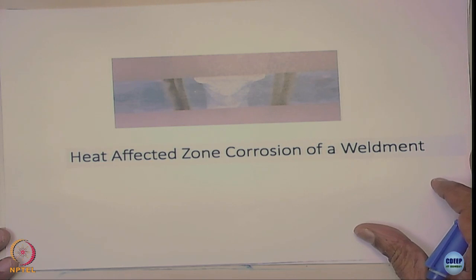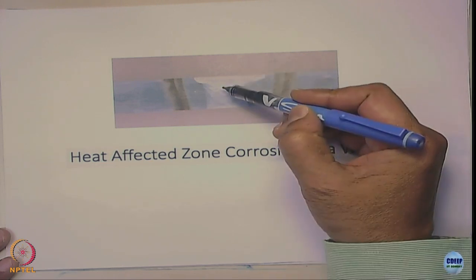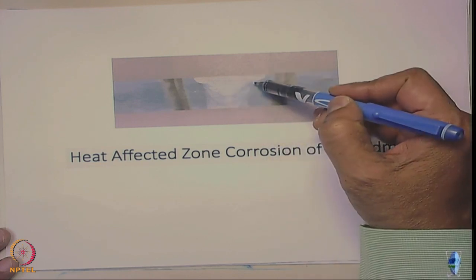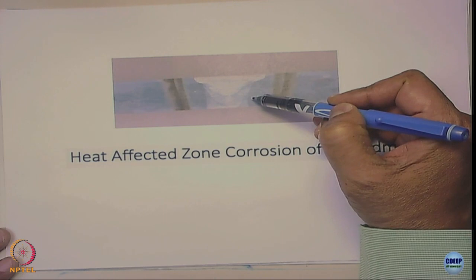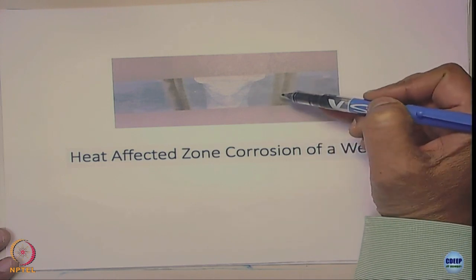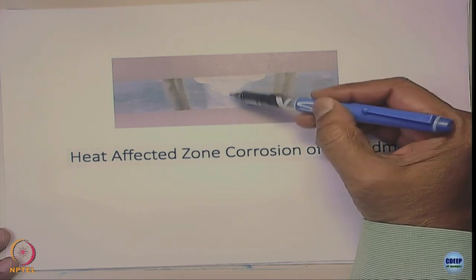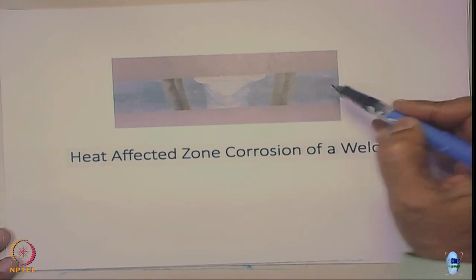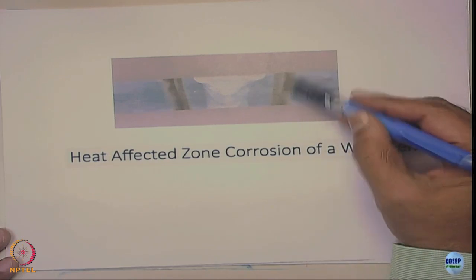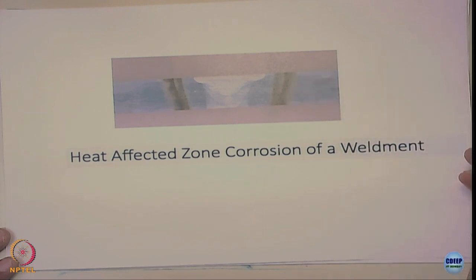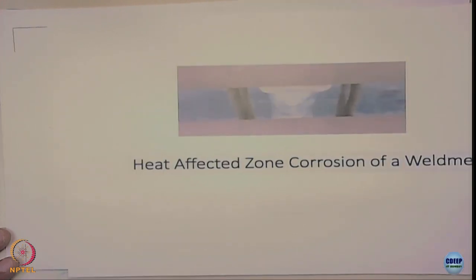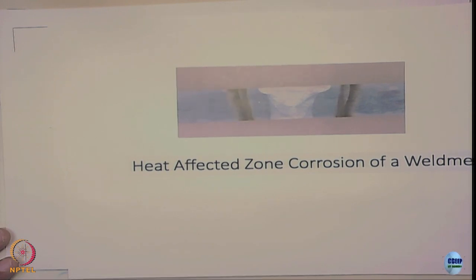Very interesting — the corrosion does not occur at the fusion zone, nor very close to the weld fusion zone; it occurs away from that. We need to understand why it does not happen very close to the weld and why not the fusion zone itself. This region is called the heat affected zone, or more precisely the weld decay zone.